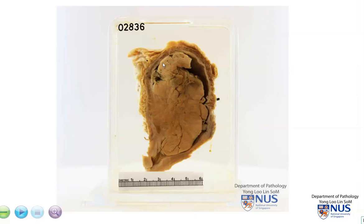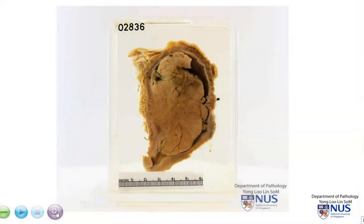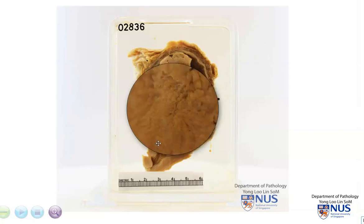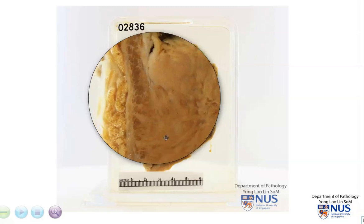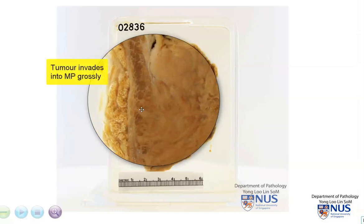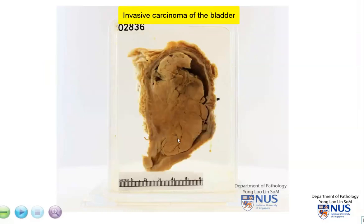What we can see here is a very large fungating tumor mass that is protruding into the lumen of the bladder and actually almost occupying the entire lumen. We want to focus on this area because the presence of invasion into the bladder wall is an important prognostic factor. Taking a closer look, we can see that this is the brown muscularis propria of the bladder wall, and this is the tan, fleshy tumor. It is quite clear that this tumor is infiltrating at least into the muscularis propria. So this is an example of invasive carcinoma of the bladder.